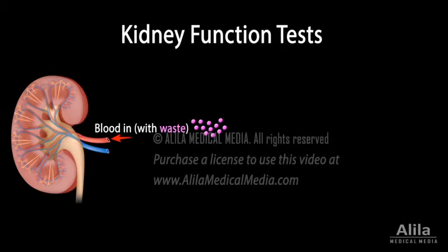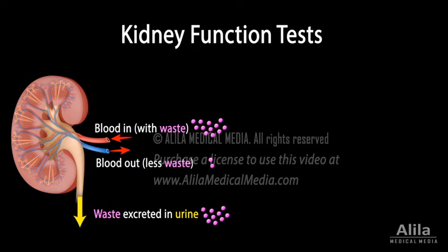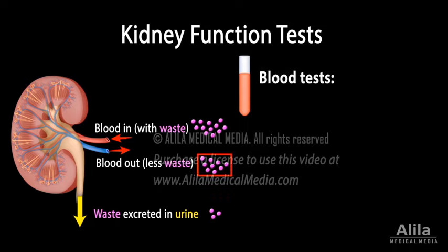The kidneys filter blood plasma, removing metabolic wastes and excreting them in urine. When kidney function declines, waste products accumulate in the blood. Their levels can be measured in blood tests to monitor kidney function.